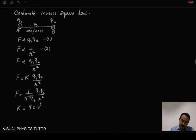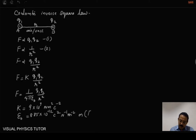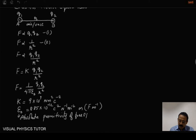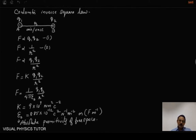Here K has a value of 9 into 10 to the power 9 Newton meter square coulomb raised to minus 2, and epsilon naught is equal to 8.85 into 10 to the power minus 12 coulomb square Newton raised to minus 1 and meter raised to minus 2. This epsilon naught is called the absolute permittivity of free space.